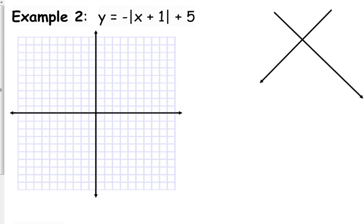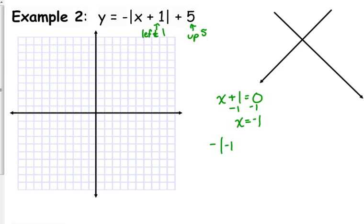Let's look at another one: negative absolute value of (x plus 1) plus 5. There's a negative in front of the absolute value, and a plus 5 on the outside. The x plus 1 inside is going to move it left 1. The plus 5 on the outside moves it up 5. Or you can set what's inside equal to 0, solve for x to get x equals negative 1, then plug back in to get y equals 5. Either way, the vertex is at (negative 1, positive 5).